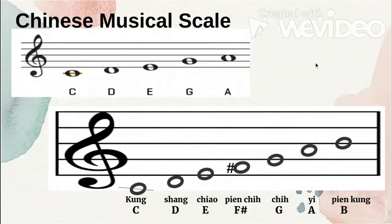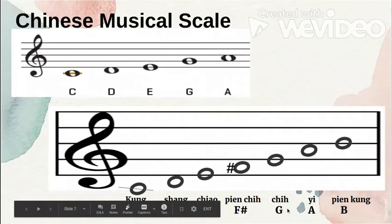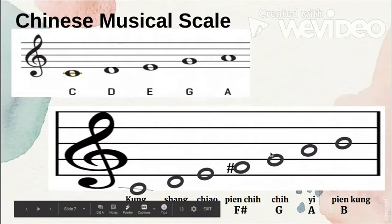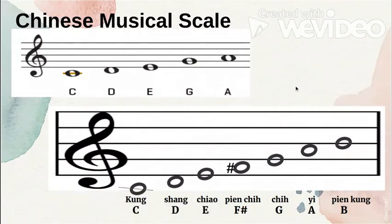However, the Chinese musical scale is not just five tones. In 1122 BC, during the Zhou dynasty, two notes were added: F sharp and B. So the full scale became Kong, Shang, Chao, Pian Cha, Che, Ye, Pian Kong. That's how they sing the scale of their music.